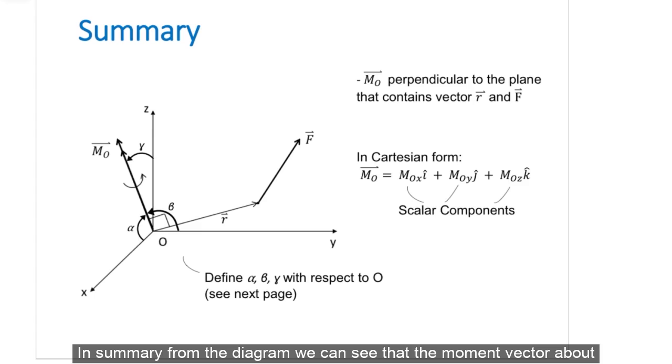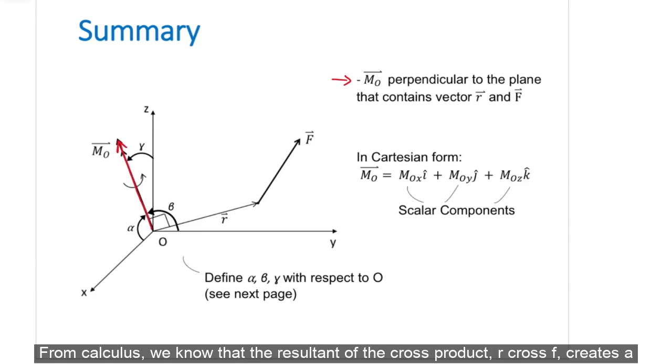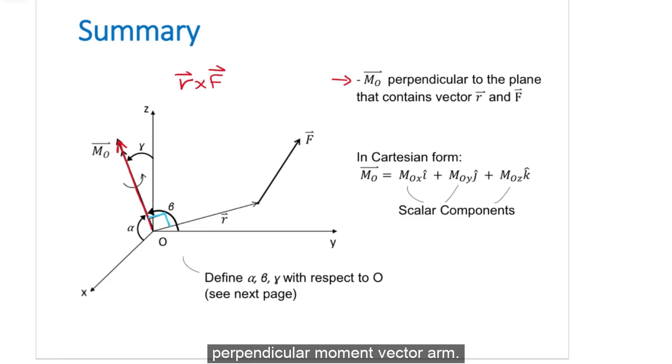In summary, from the diagram, we can see that the moment vector about the origin is perpendicular to the plane that contains the position vector and the force vector. From calculus, we note that the resultant of the cross product, r cross f, creates a perpendicular moment vector arm.